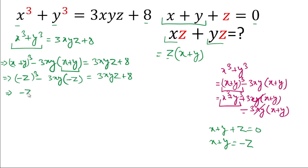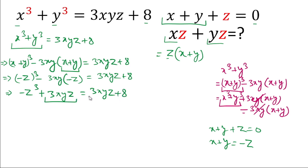Simplifying: (−z)³ = −z³, and −3xy(−z) = +3xyz. So we get −z³ + 3xyz = 3xyz + 8. The +3xyz on both sides cancels, leaving −z³ = 8.